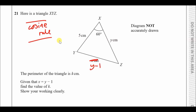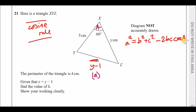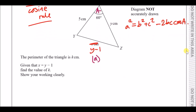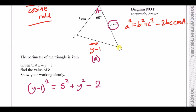Using the cosine rule: a squared equals b squared plus c squared minus 2bc cos A. Capital A is the known angle, so the side opposite is little a, which is y minus one. The other two lengths b and c are five and y. Substituting: (y minus one) squared equals five squared plus y squared minus two times five times y times cos 60.